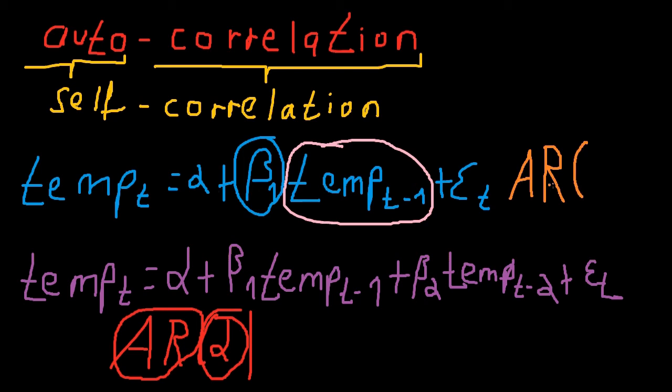And this would be, of course, an AR(1) model, because we're only using one lagged variable, and we're using one bygone time period. So this is an AR(1) model, while this is an AR(2) model.